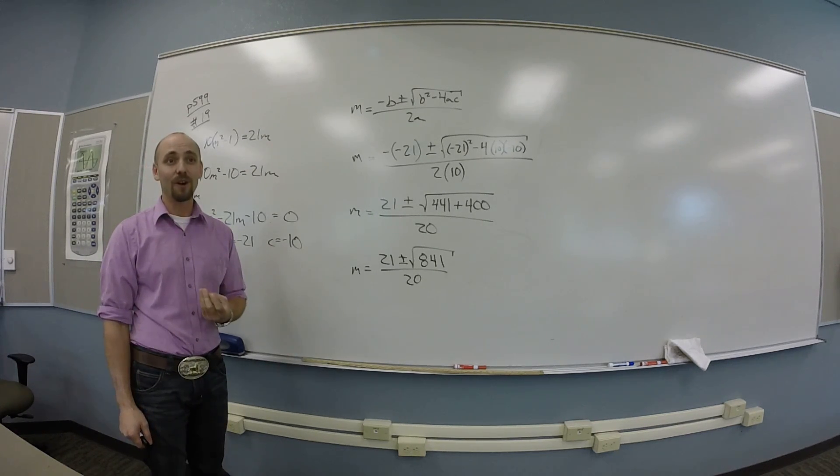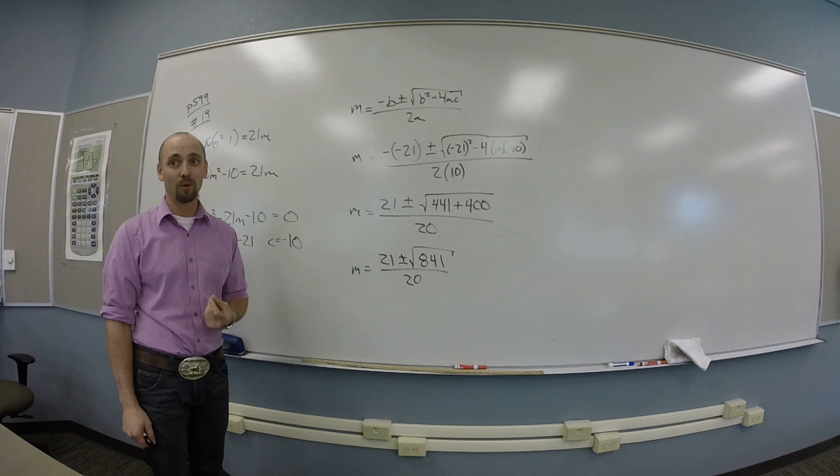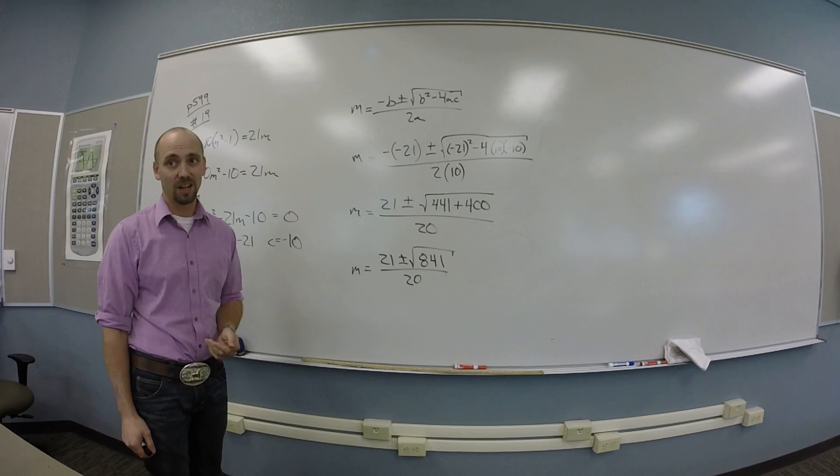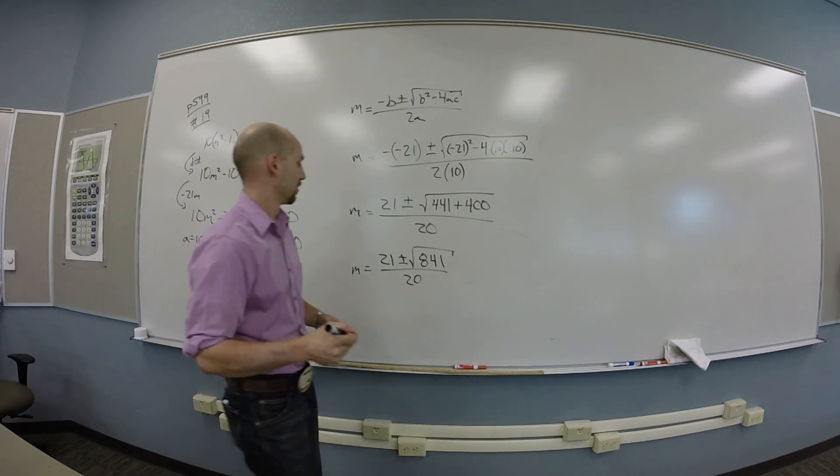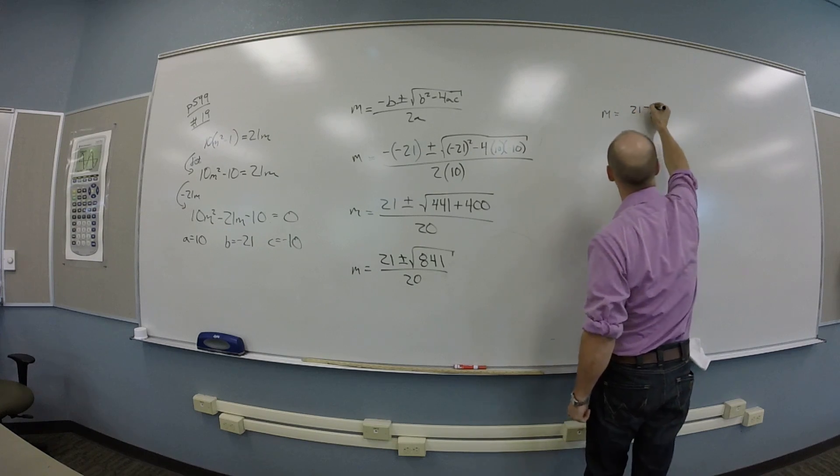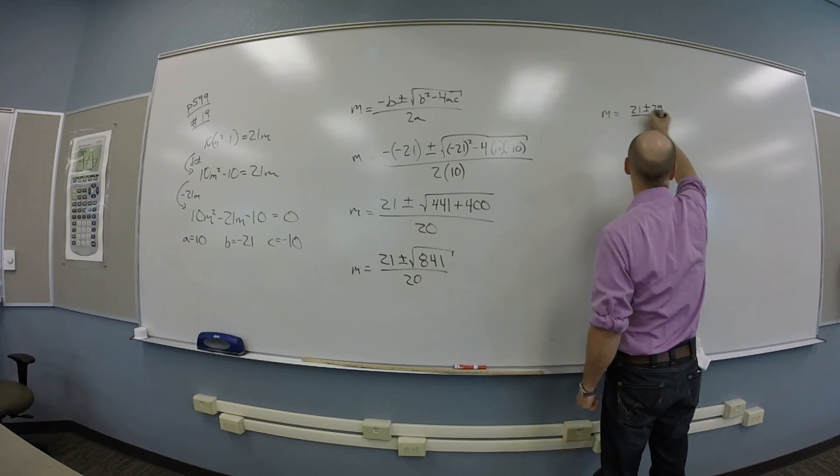Past that I would either have to know some more tricks or spend some more time thinking. I'm not so inclined to do that. So cram this in a calculator, get 29. So I found out m is 21 plus or minus 29 over 20.